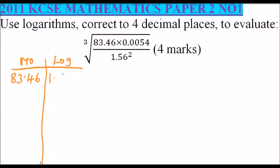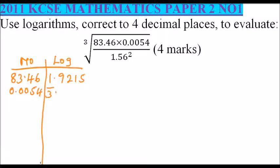That gives you 1.9215. I hope you know how to get the logarithm of a number. Then we take 0.0054 — because this is a decimal, we move the decimal place three places to where we have 5 and 4, so we write it as bar 3, then get the logarithm of 5.4, which gives 0.7324.